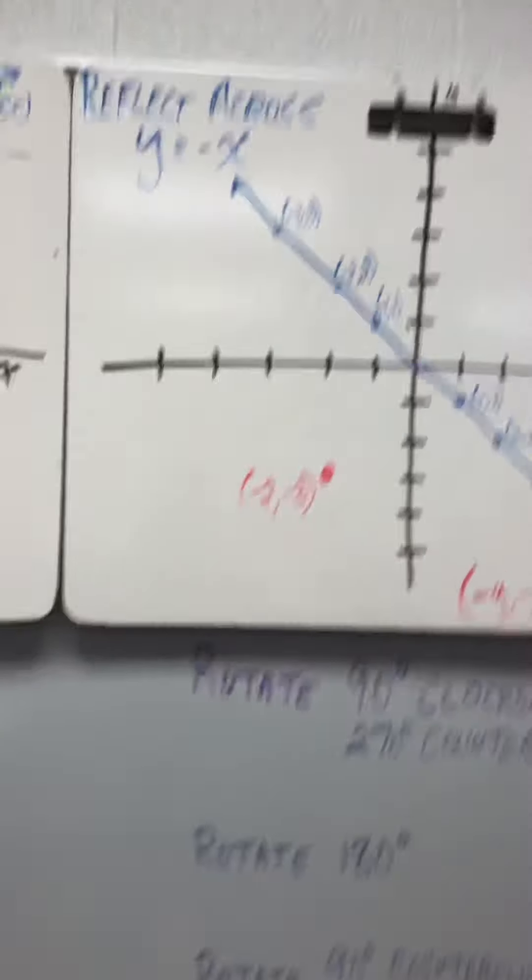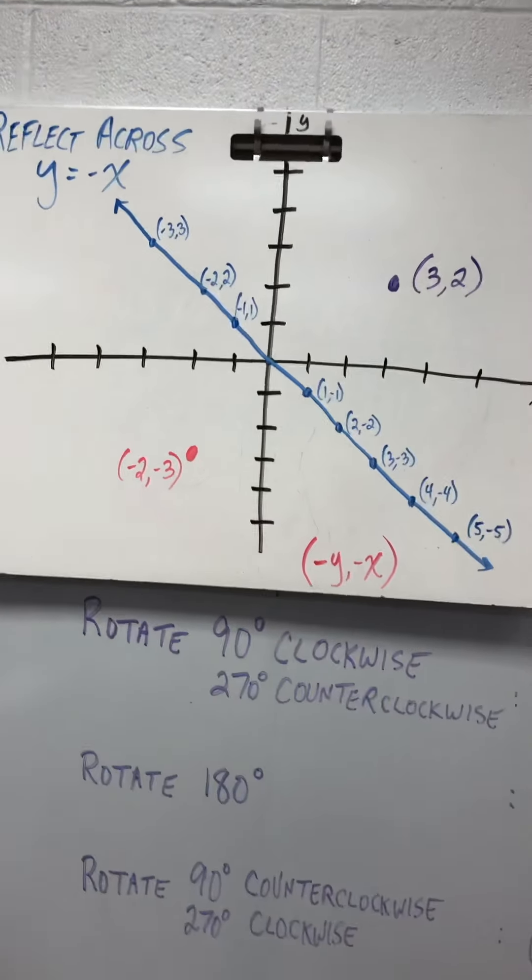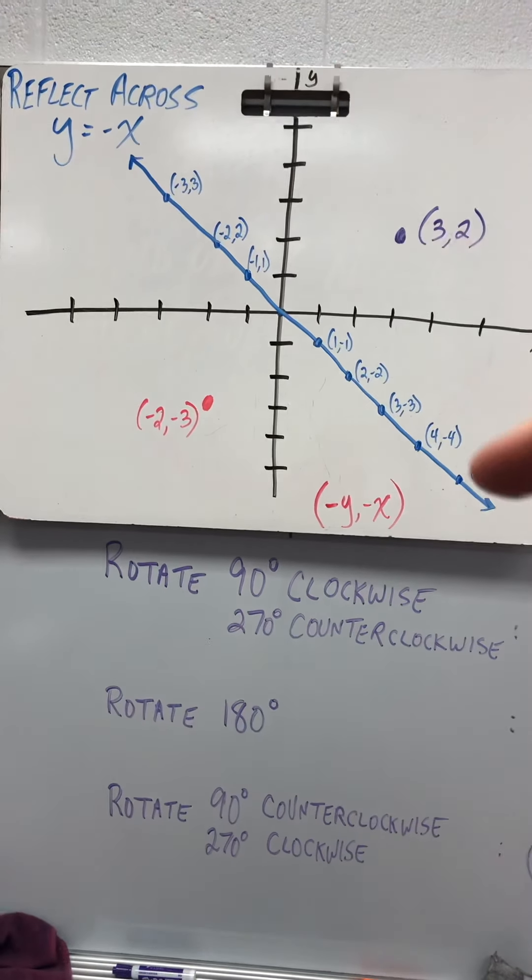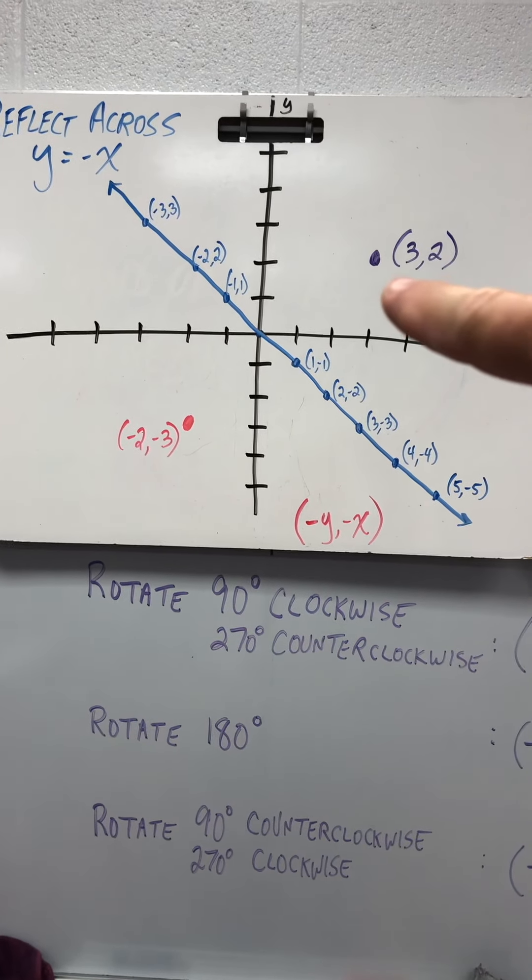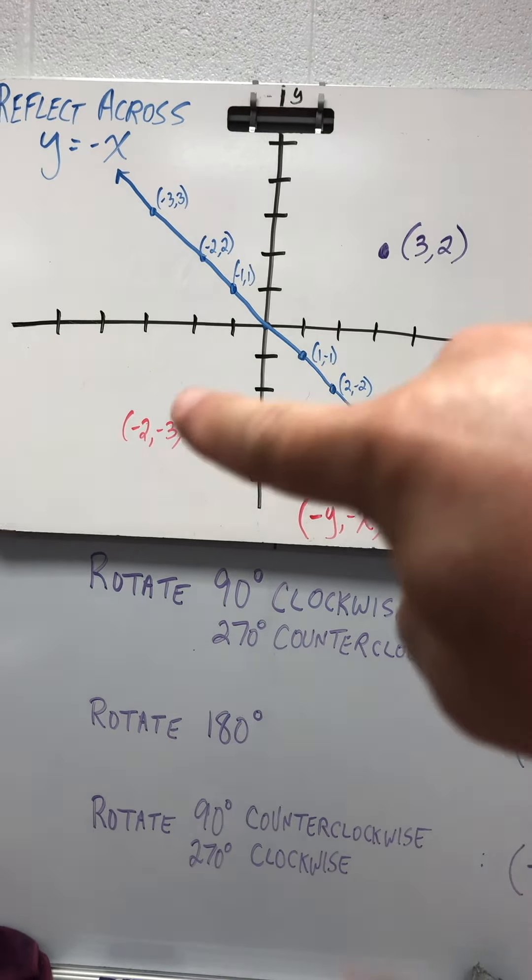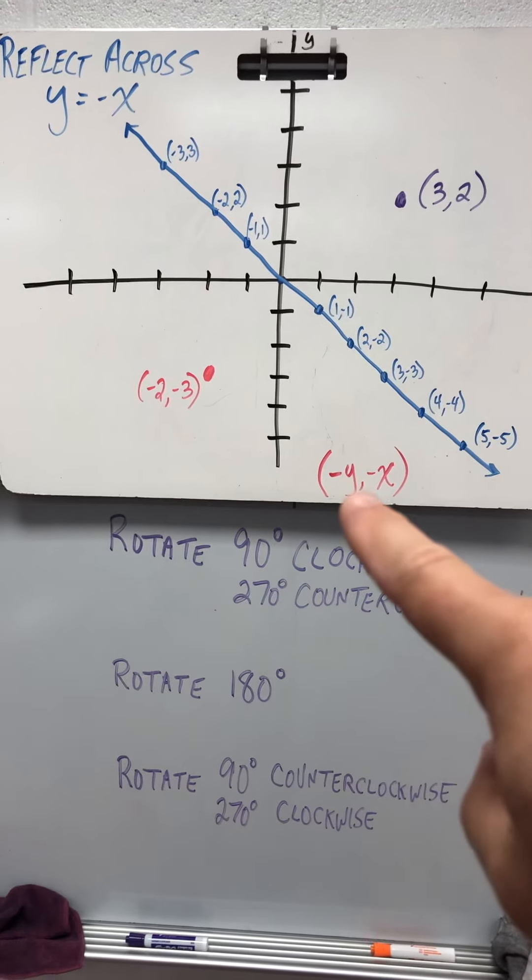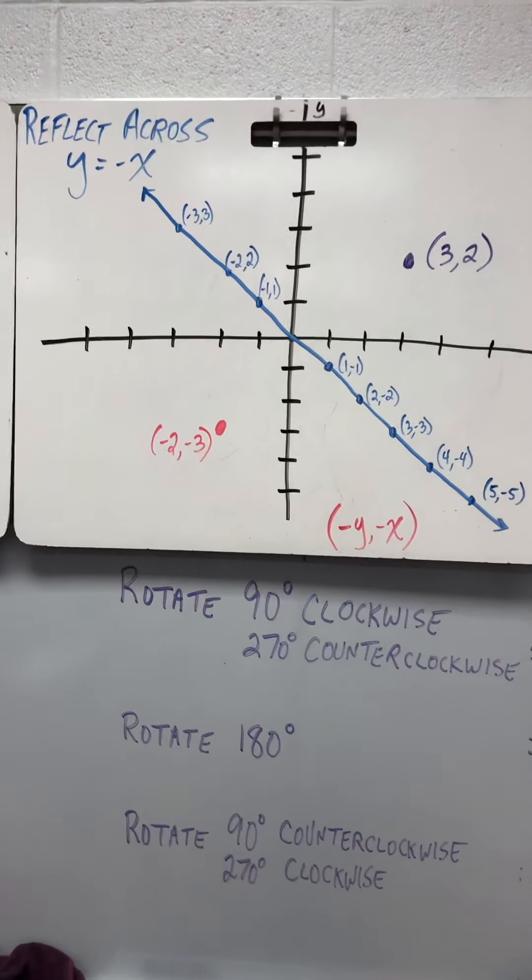To reflect across y equals negative x, the graph of y equals negative x is right here. If your original point here is 3, 2, the reflection is down here, negative 2, negative 3, or negative y, negative x. Okay?